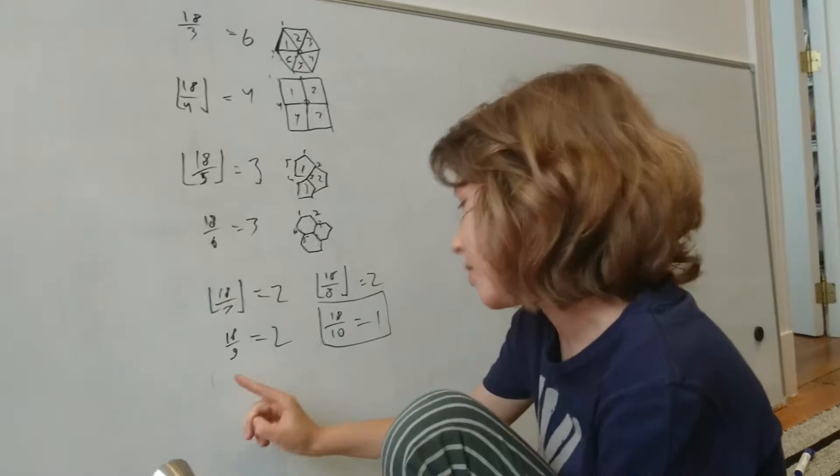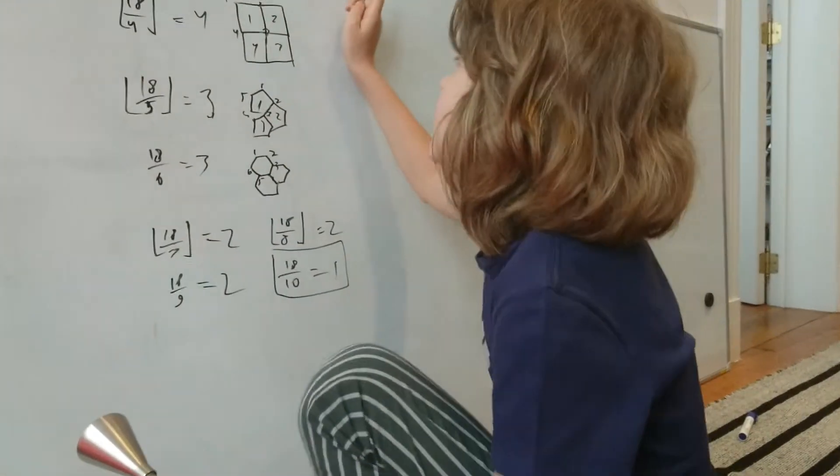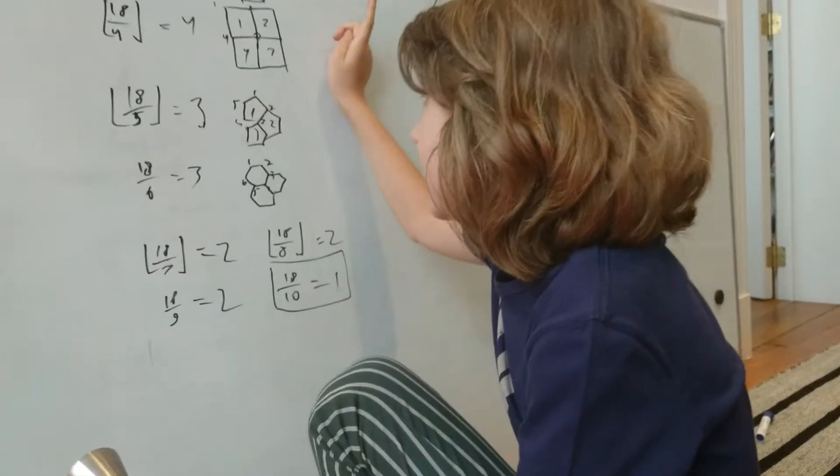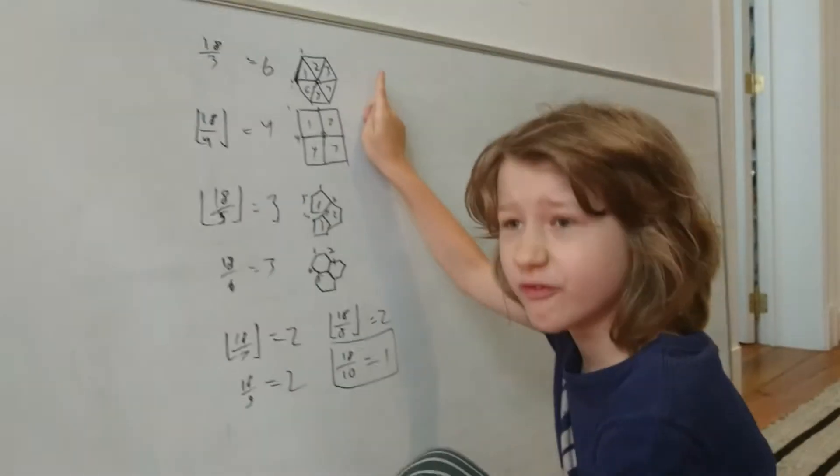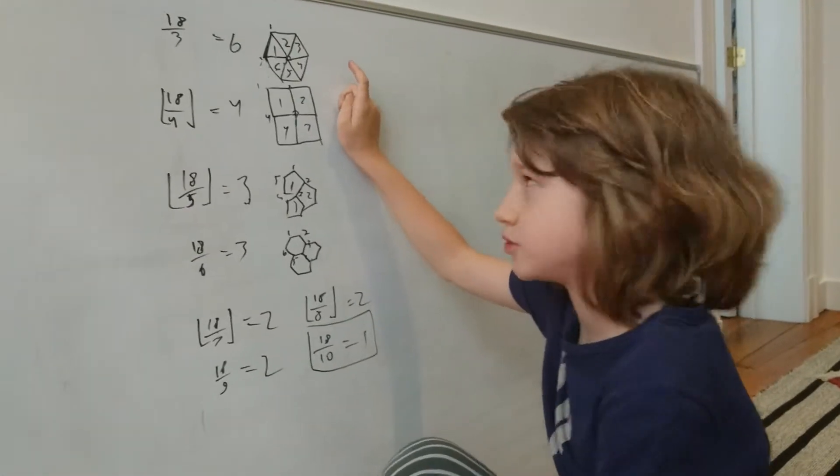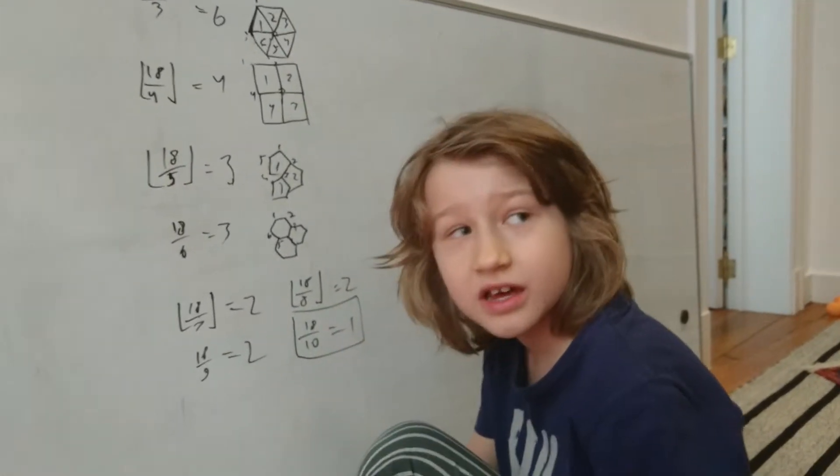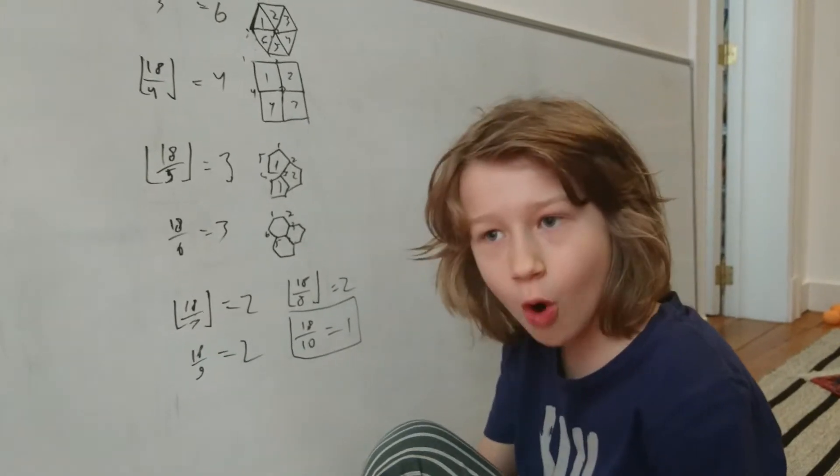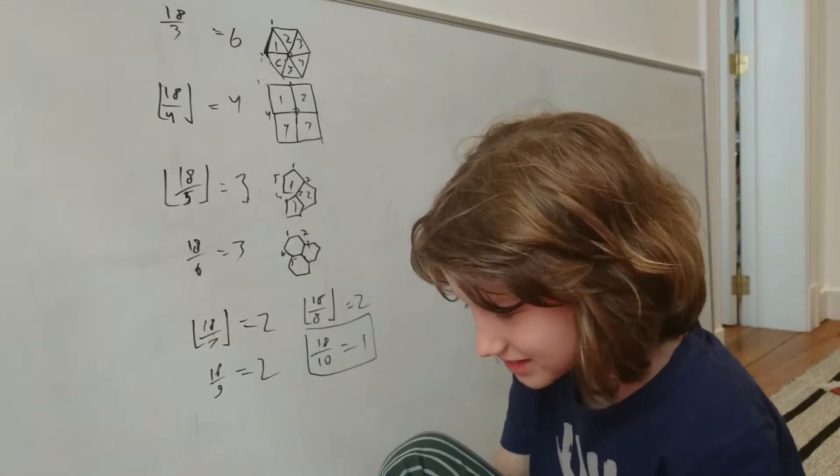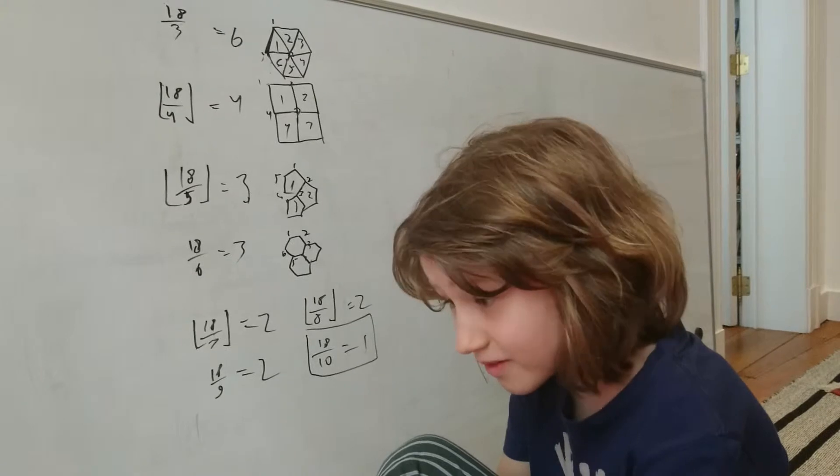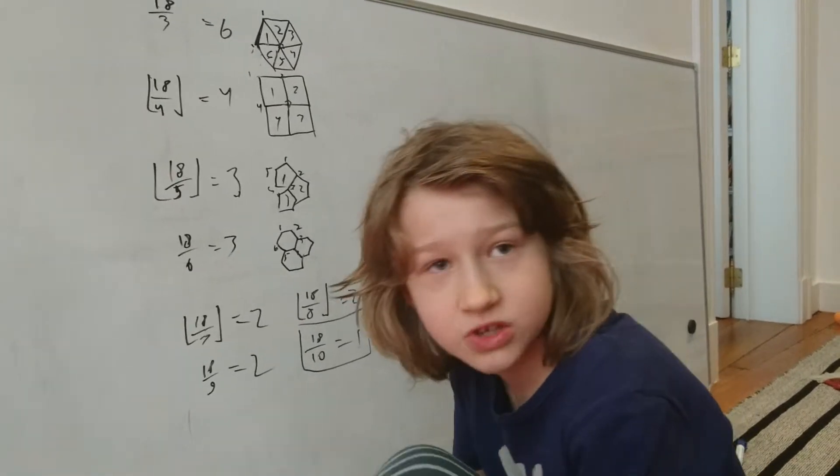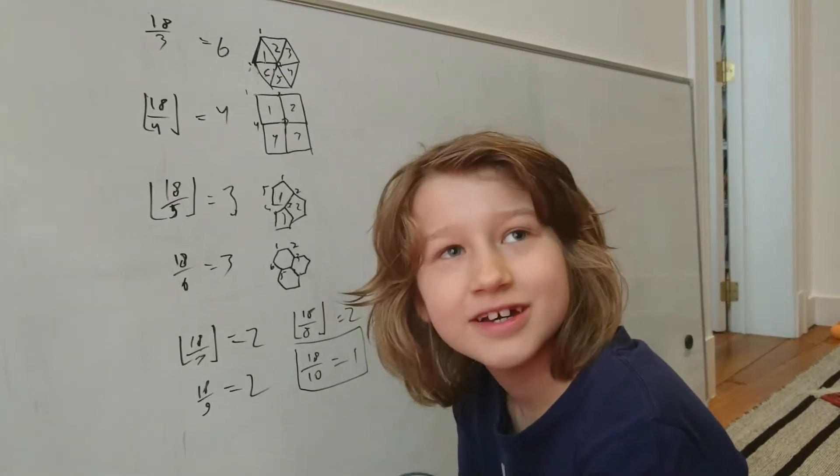19 also has the property. 9 is the last one that works. For 20, the last one that works is the first one that works. This one. And actually no more numbers actually work at the beginning at all.